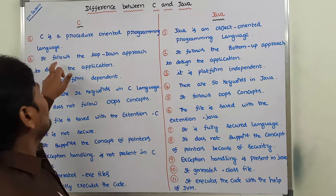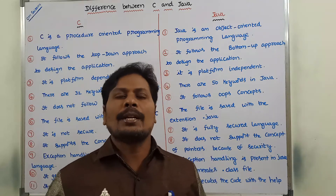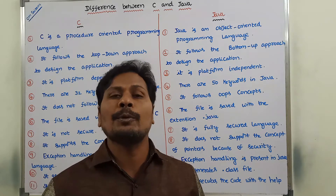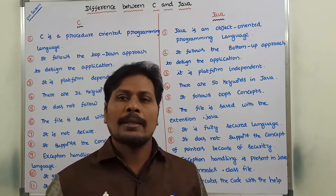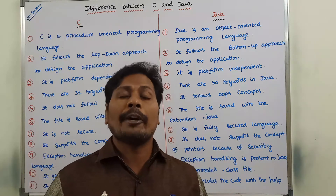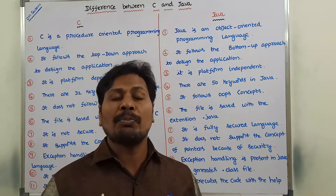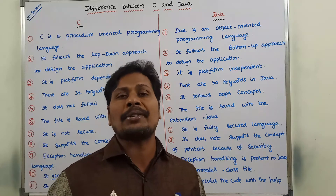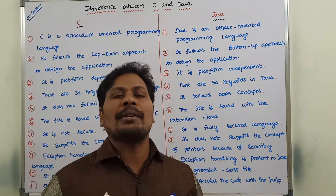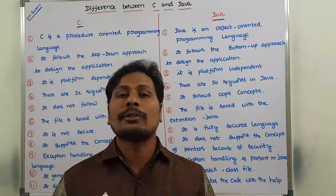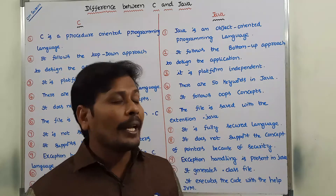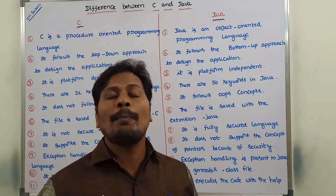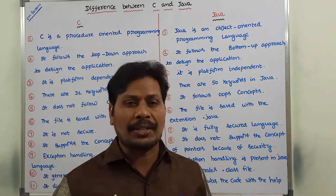Next point: In C language, to design any application we have to use the top-down approach. Suppose we want to perform one application — for that purpose we have to design the application using the top-down approach. Whereas in the case of Java, Java follows the bottom-up approach to design an application.